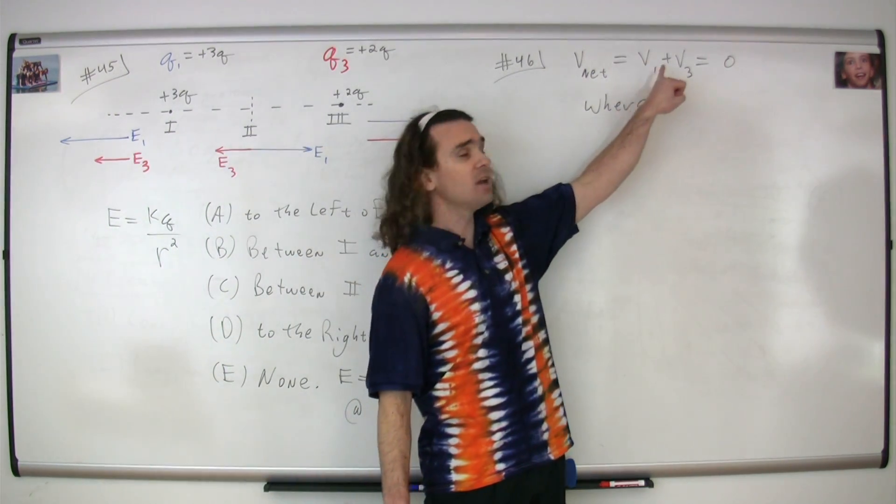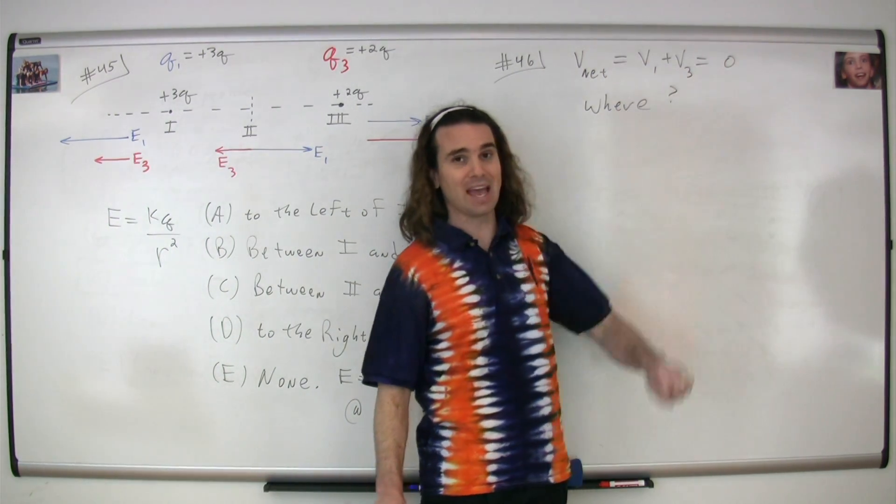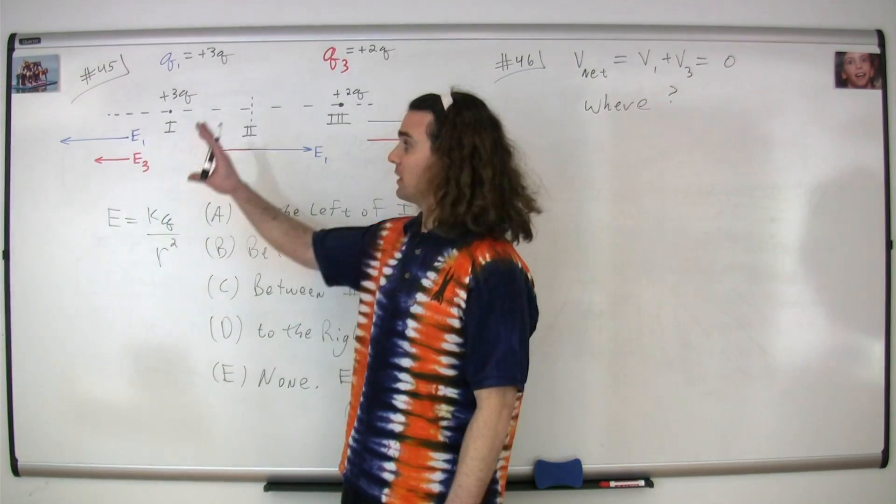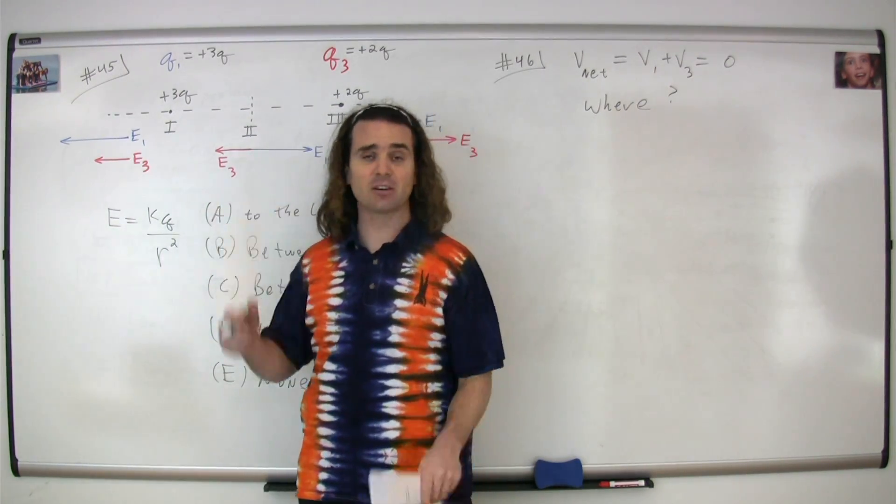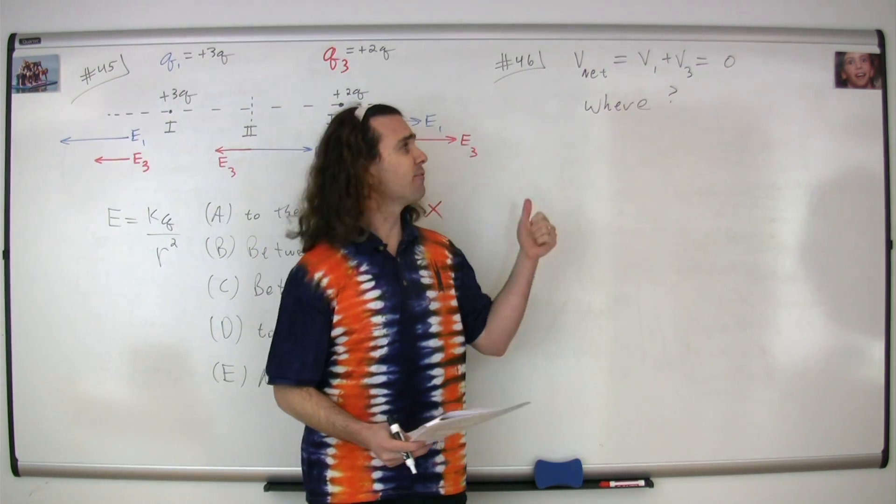Where we only add the electric potential of one to the electric potential of three, we get zero. The major difference between electric field and electric potential is that electric field is a vector and electric potential is a scalar.